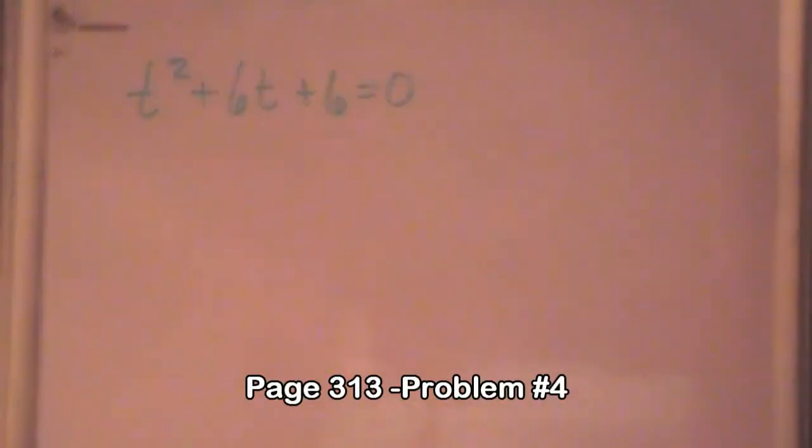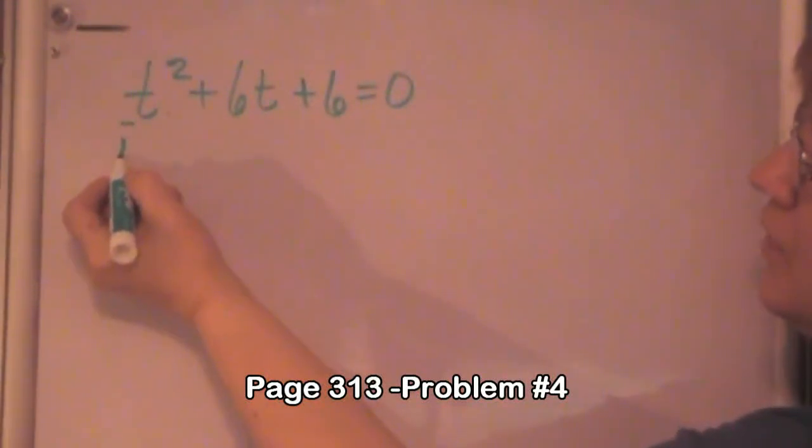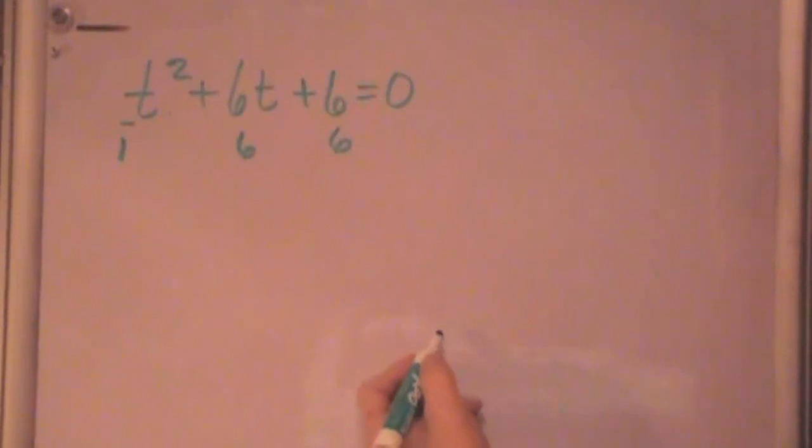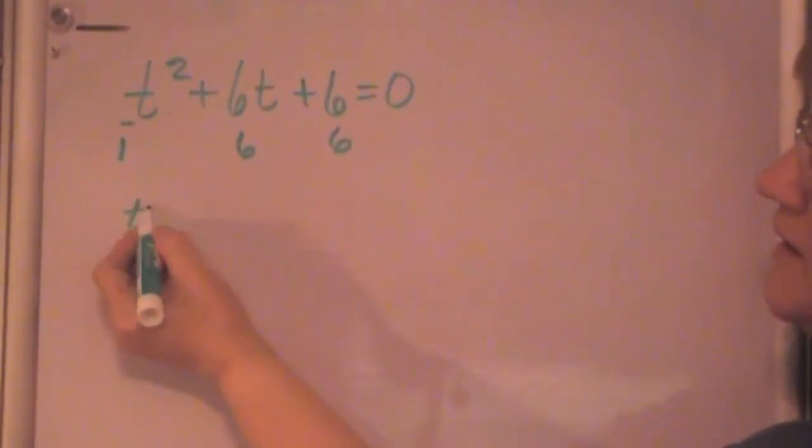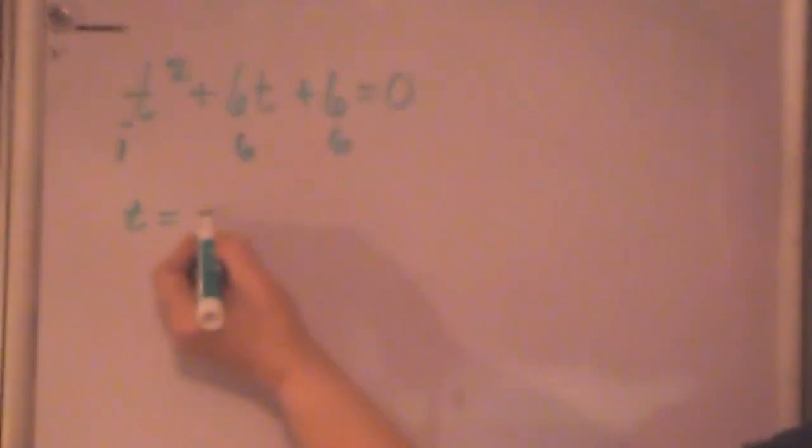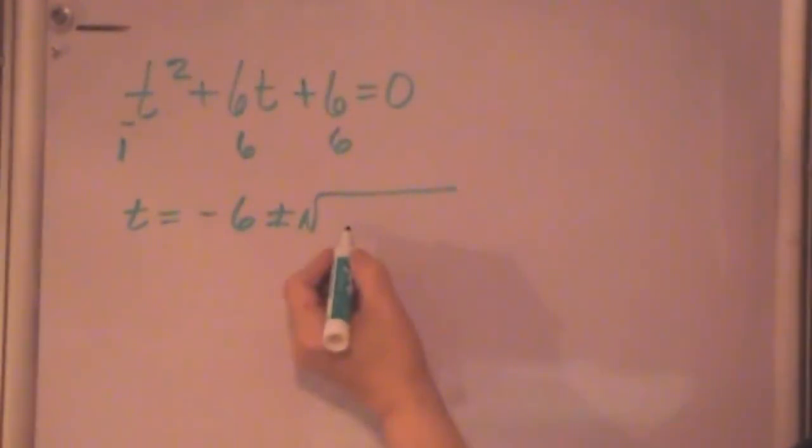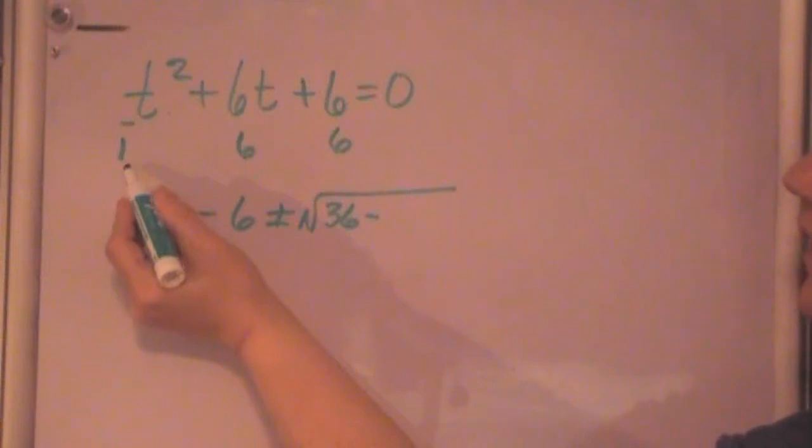Okay, in this quadratic, our a is 1, so this is our a, 1, b is 6, c is 6. I'm going to put it into our quadratic formula. So t, our variable, will be equal to minus b, which is minus 6, plus or minus the square root of b squared, which is 36, minus 4 times a, which is 4, a is 1.